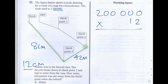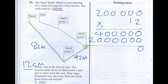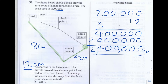Let's work out what that would be in total distance in the real world: 200,000 multiplied by 12. 2 times 200,000 is 400,000. Adding those together, the total distance that she'd have to travel in centimetres would be 2.4 million centimetres.